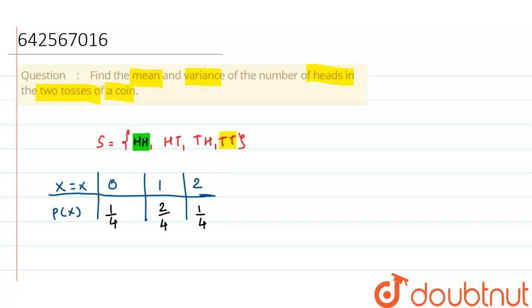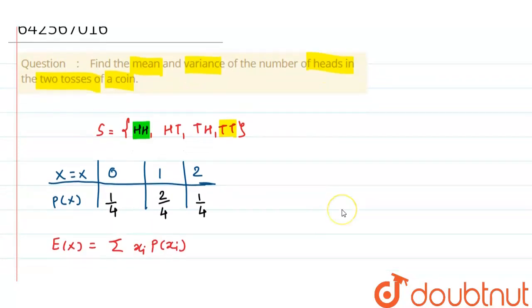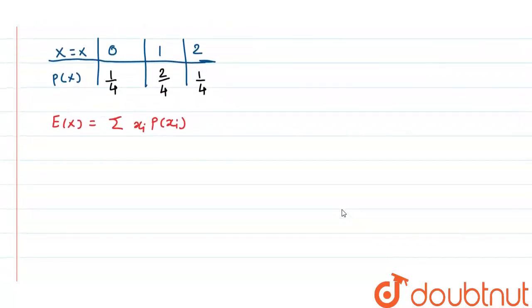Now, let me find out mean. So, formula for finding mean is E of X is equal to sigma of xi into P of xi. So, this will be 0 into 1 by 4 plus 1 into 2 by 4 plus 2 into 1 by 4.